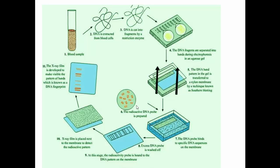Now let's go to the mechanism process of DNA Fingerprinting. DNA Fingerprinting follows some basic steps. The first step is that a sample is collected — normally a blood sample, but any type of tissue cell from an individual can be used. The sample is then taken to the laboratory.